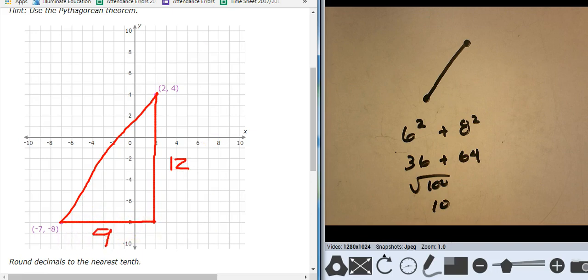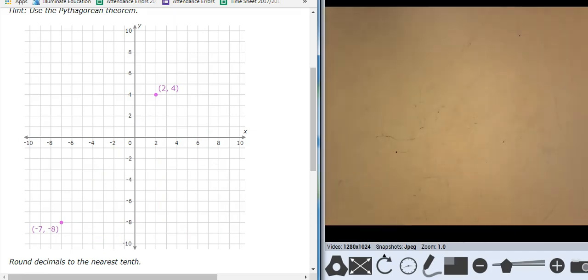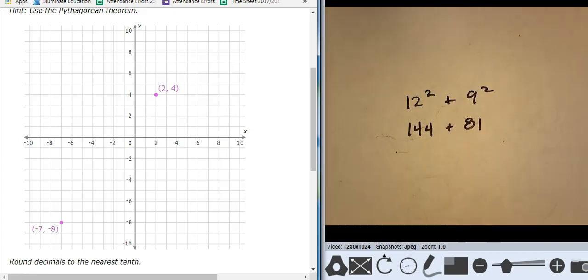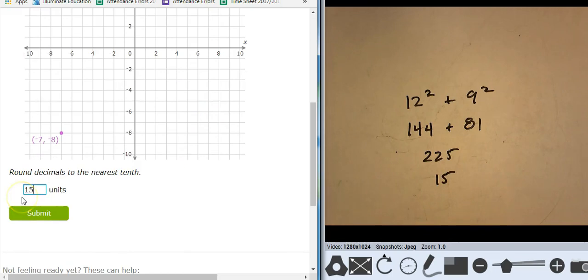So I'm using 12 and 9. All right, 12 and 9. 12 squared plus 9 squared. So 144 plus 81 takes me to 225. Square root of 225 is 15. So the distance between the points is 15 units.